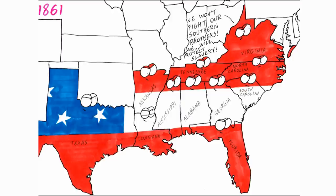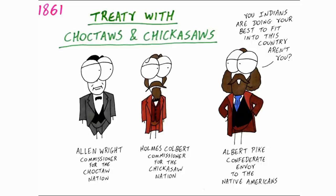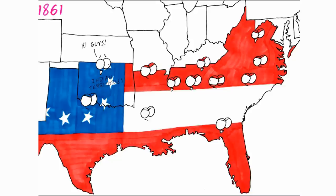Refusing to send troops against their neighbours, slave states Virginia, North Carolina, Tennessee, and Arkansas actually joined the Confederacy, with the capital getting moved to Richmond, Virginia. Some Native American tribes in the Indian territories sided with the Confederacy, becoming their allies and hoping for support from the Confederacy.